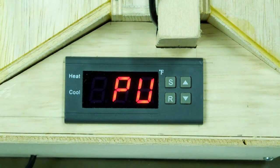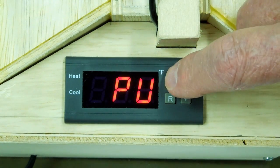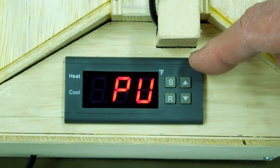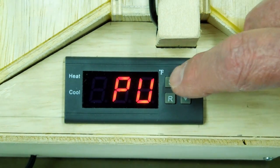Go to the next one which is PU, a delayed start. I have that set at zero. So when it gets 1 degree below the set temperature, it comes back on immediately.